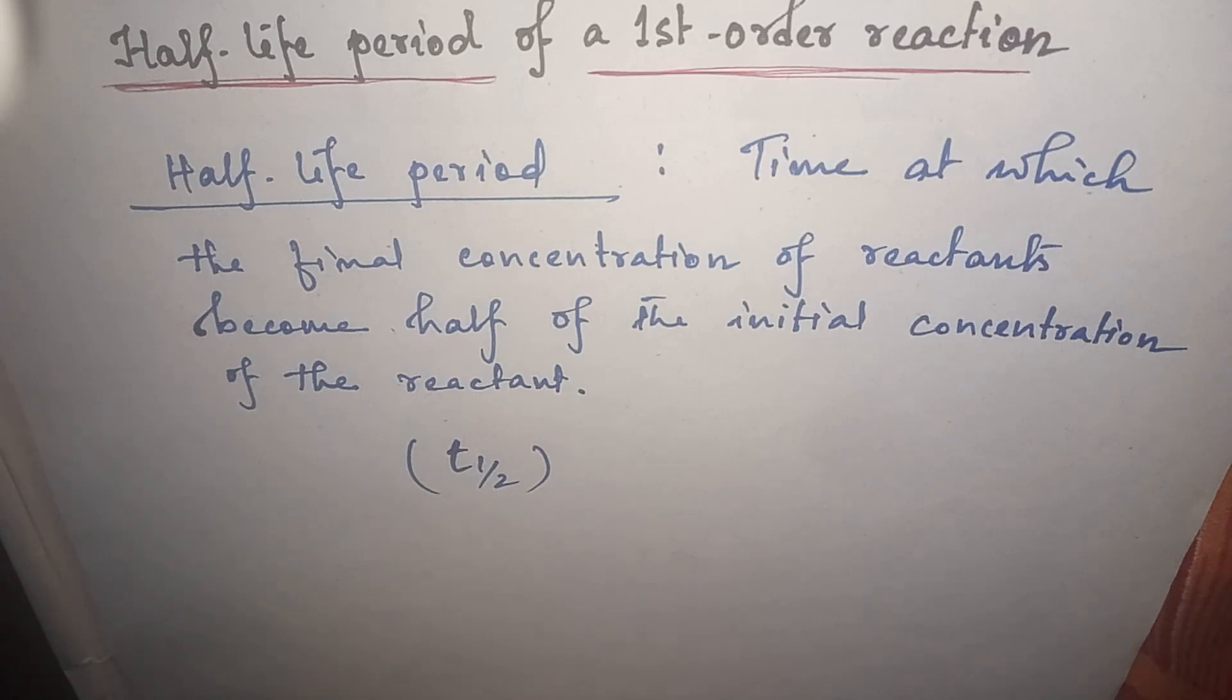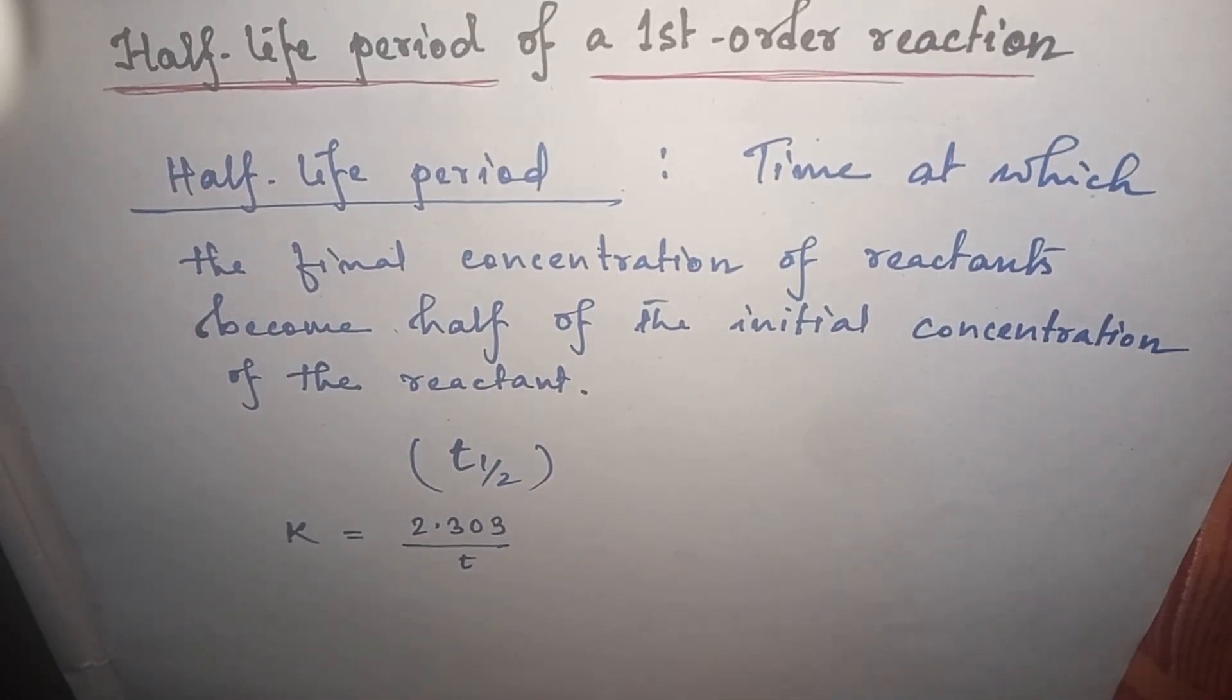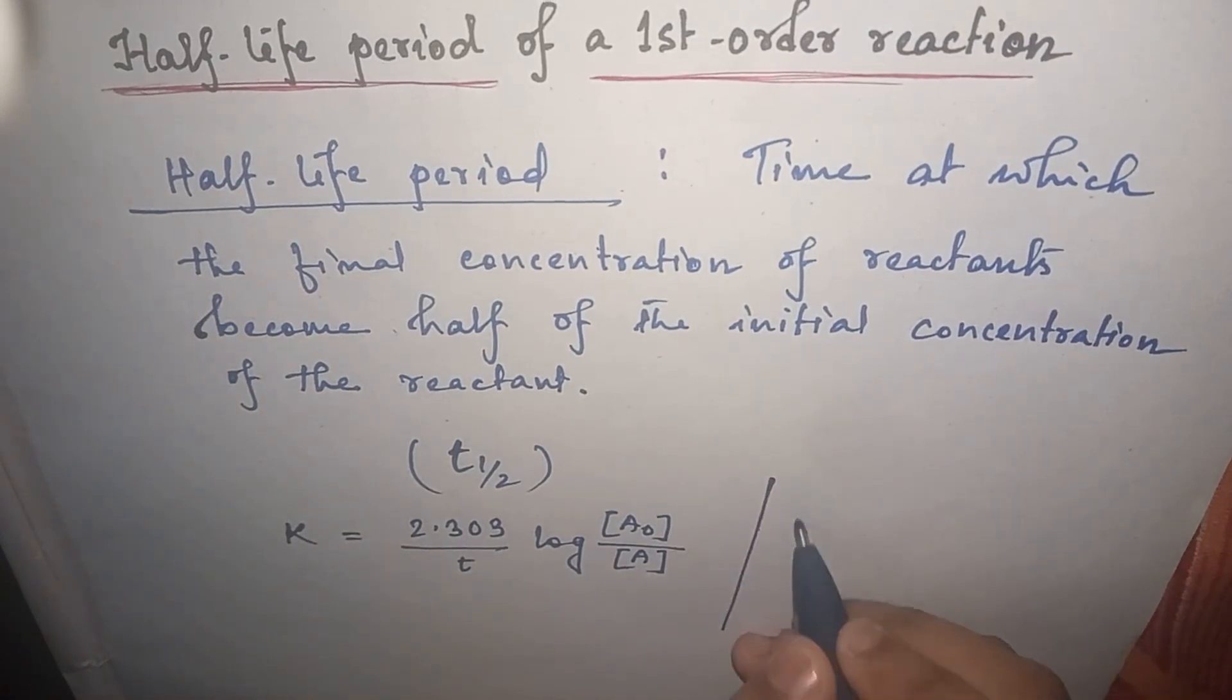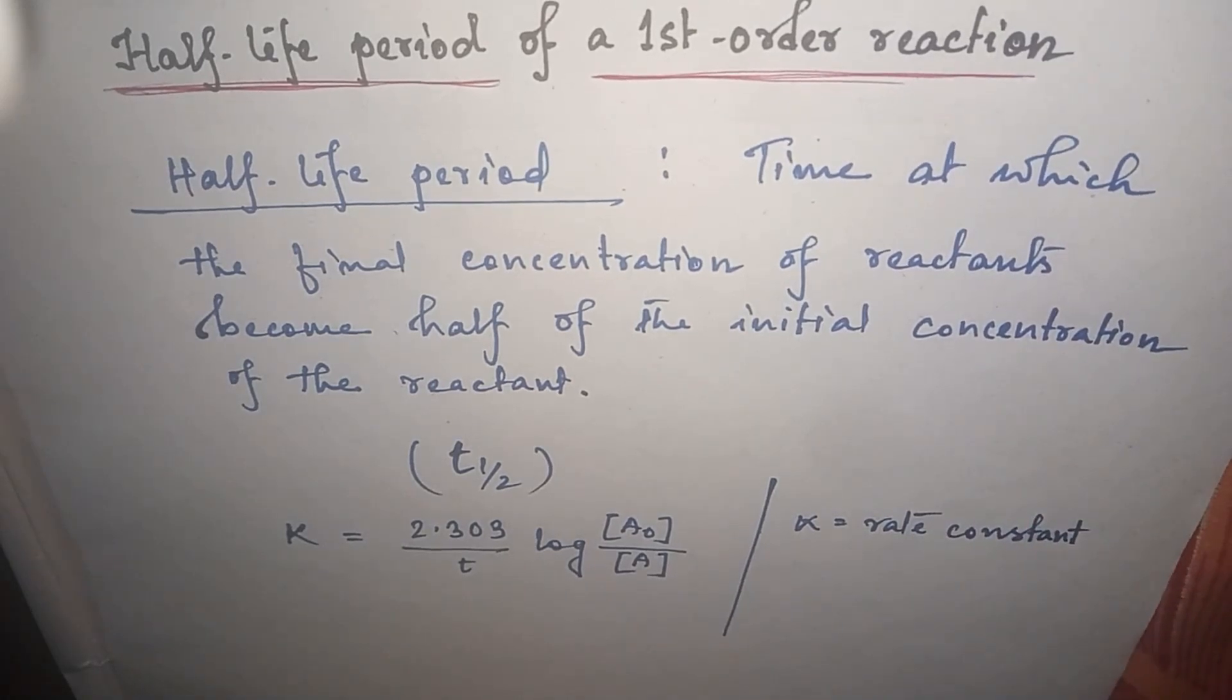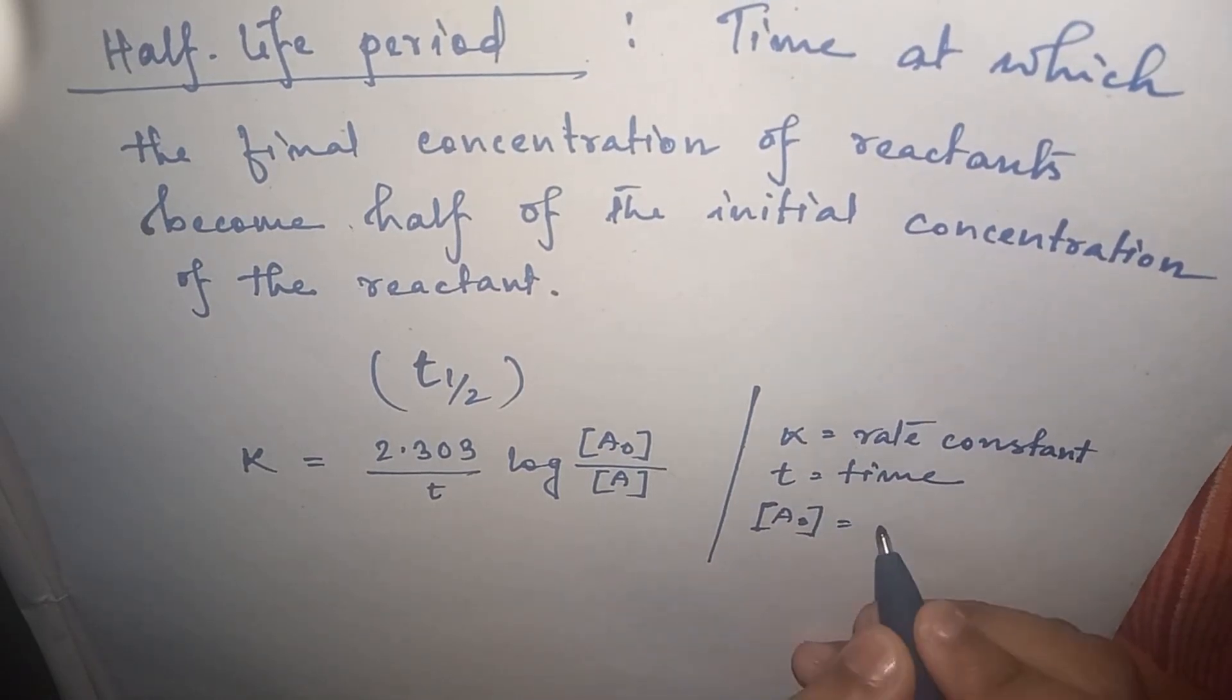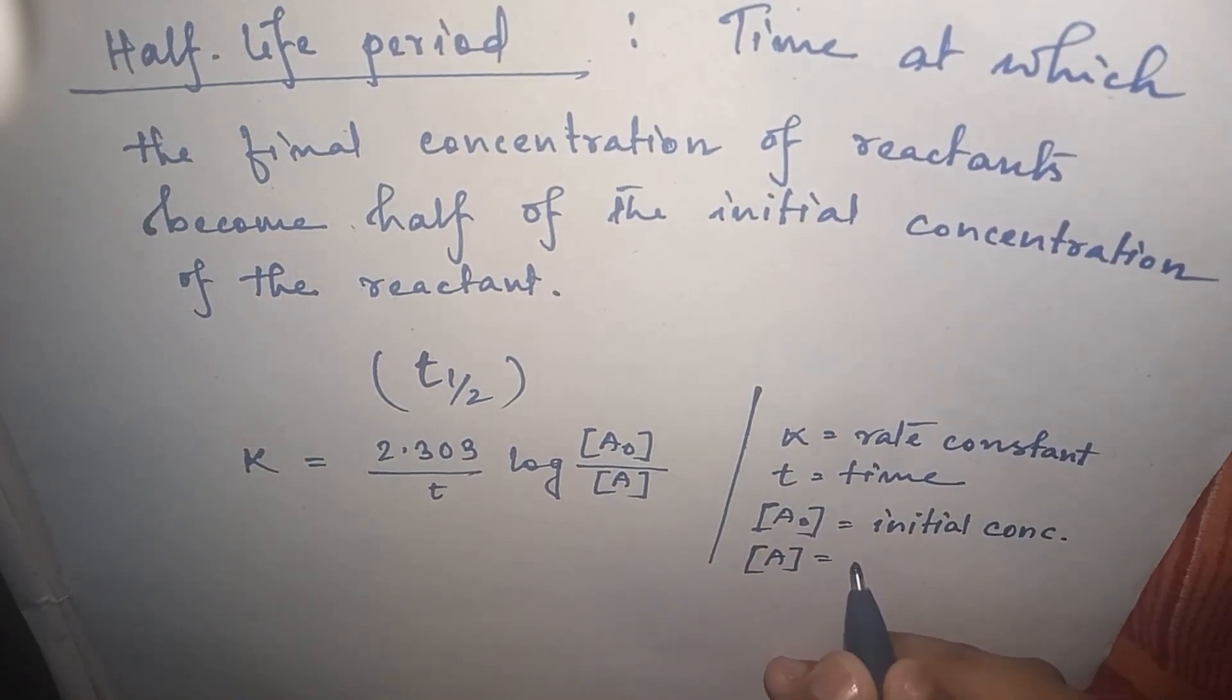So for first-order reaction, the rate constant formula is K equals 2.303 by T log of [A₀] upon [A], where K is the rate constant, T means time, [A₀] equals initial concentration, and [A] is the final concentration.